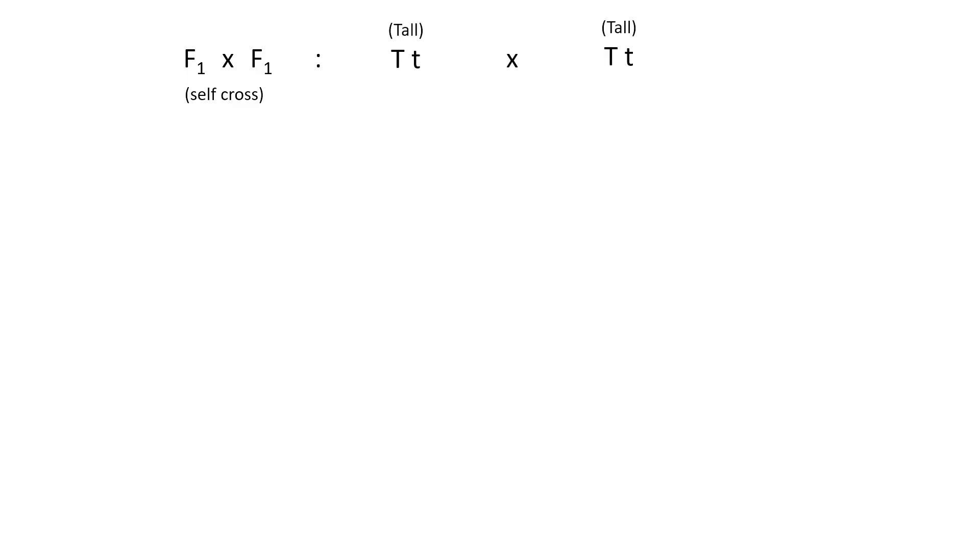Since homologous chromosomes separate during gametogenesis, these two alleles will separate and end up in different gamete cells. To help you combine the alleles from each parent during fertilization to produce the F2 generation, you could build a Punnett square like this.